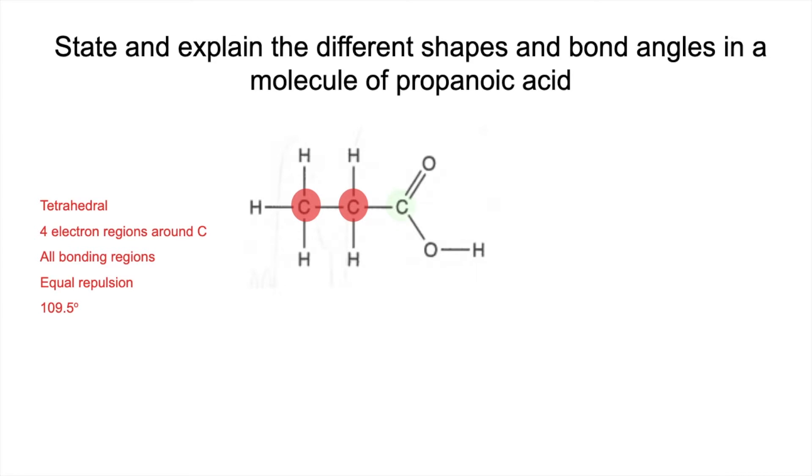Next atom we'll look at is this carbon here. So again we'll just go through the same format, shape, then explanation. So the shape is trigonal planar. We've got three electron regions around that carbon. Just remember that a double covalent bond counts as one electron region. They're all bonding regions, so there's going to be equal repulsion, and so the angle associated with that is 120 degrees.